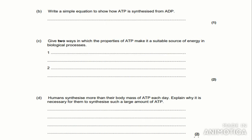The next question: 'Write a simple equation to show how ATP is synthesized from ADP.' Nice and easy: ADP plus Pi makes ATP. Be careful to get the equation the right way round, as it says ATP from ADP. Also, you don't need to write the reversible arrow here as it is only asking you for one of the reactions, so you only need to write it one way.